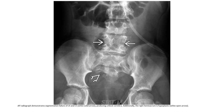AP radiograph demonstrates segmentation failure of multiple vertebral levels, producing a blocked vertebra. Additionally, the right hemi-sacrum is hypoplastic.